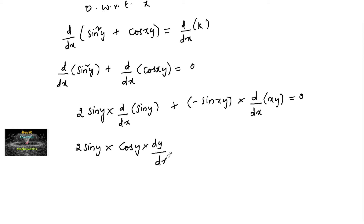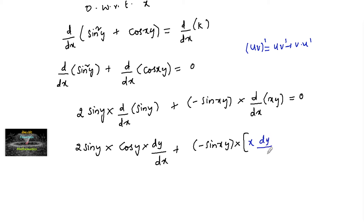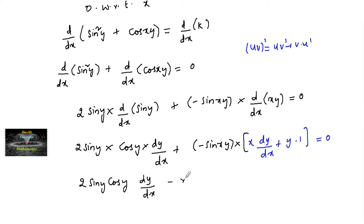So into dy/dx, and then minus sin(xy) into d/dx of xy. Applying the product (uv) rule: d/dx of xy = x · dy/dx + y · 1. This gives 2 sin y cos y · dy/dx minus x sin(xy) · dy/dx minus y sin(xy) = 0. Now separate the dy/dx terms.